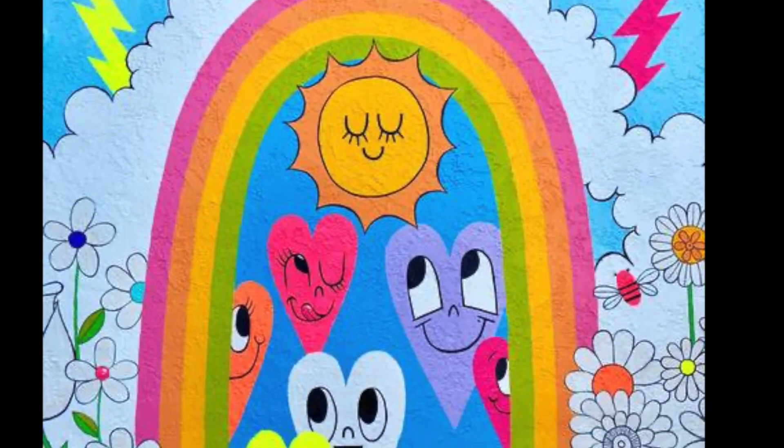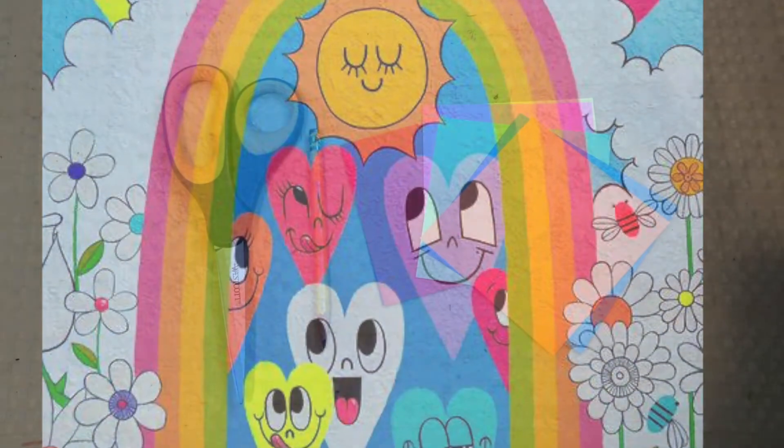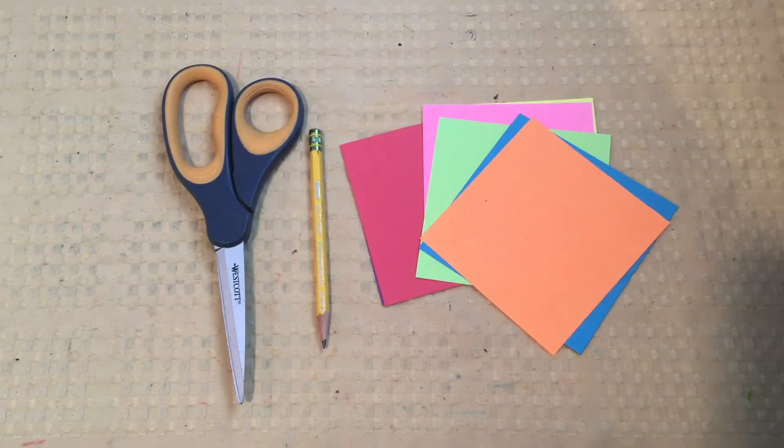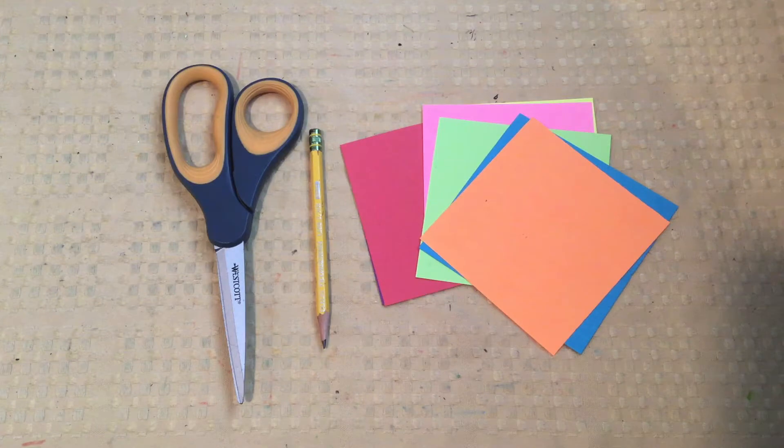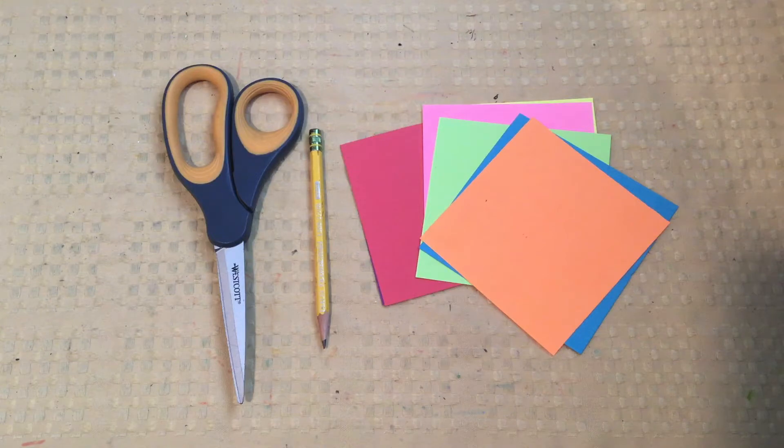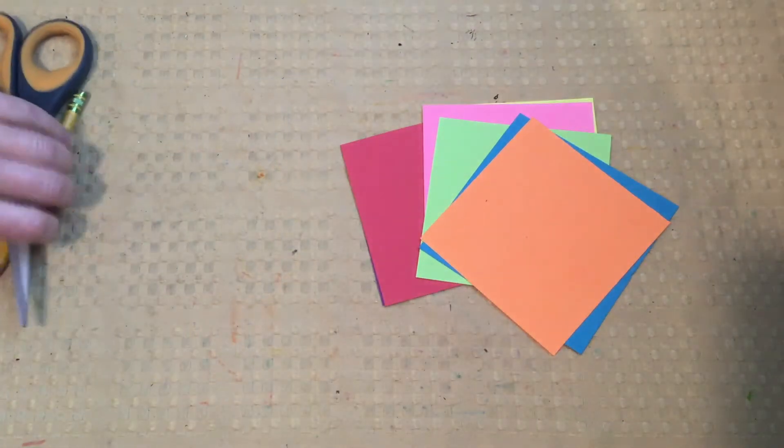For now we are going to be focusing on creating hearts out of paper. For the beginning of this project you are going to need a pair of scissors, a pencil, an eraser, and some pieces of colorful scrap paper. Grab those supplies and when you're ready come on back.